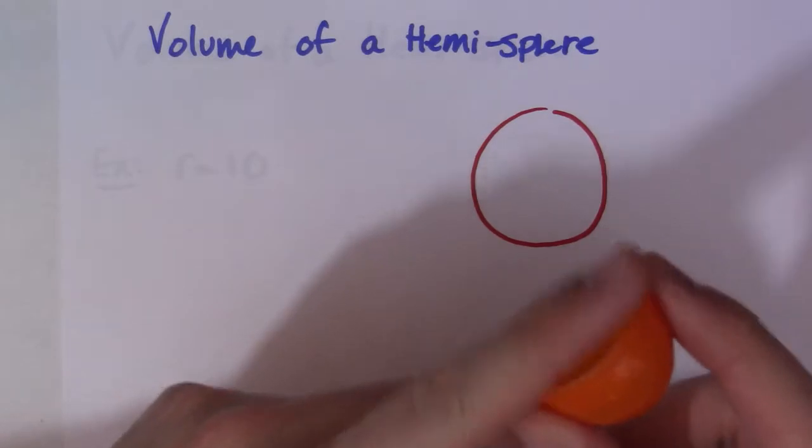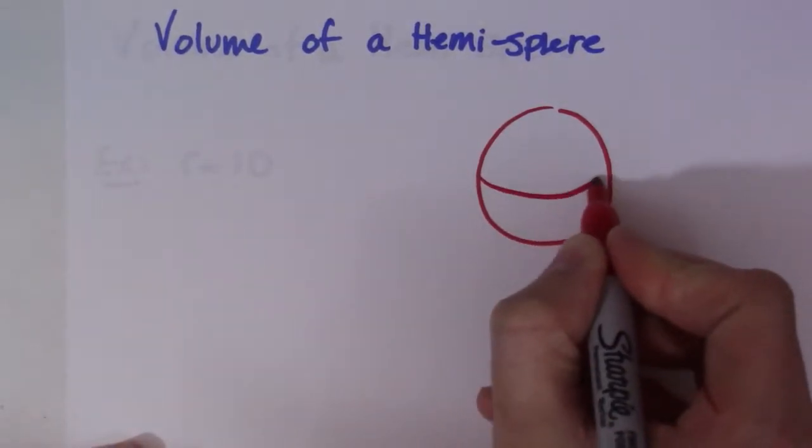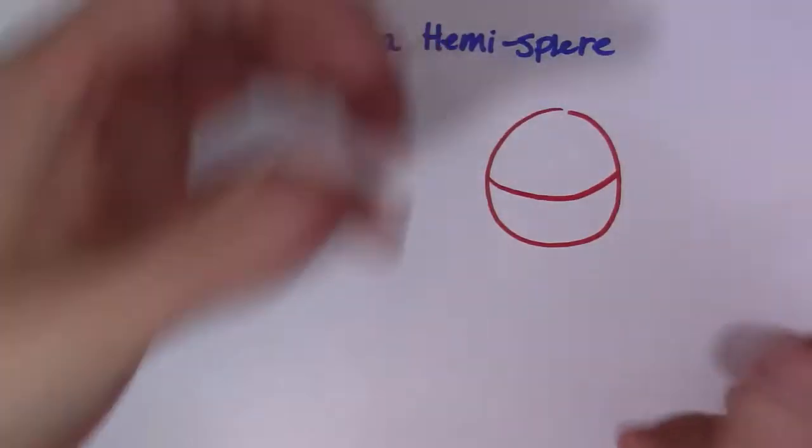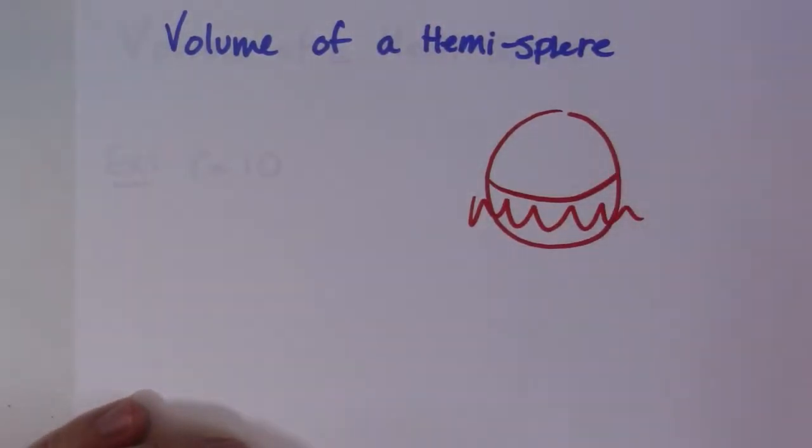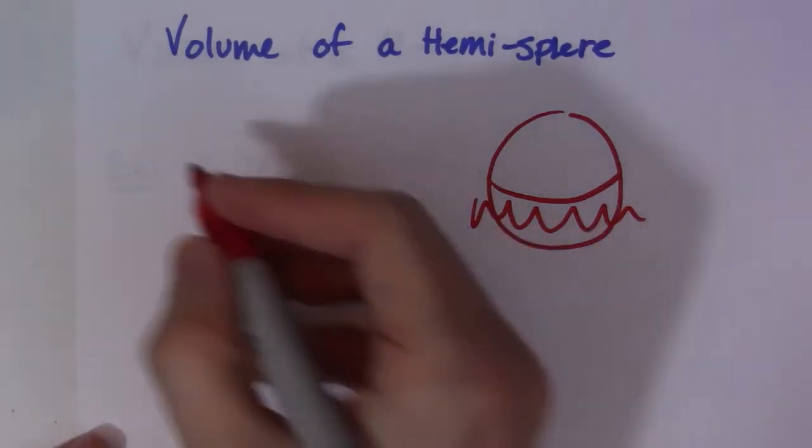this would be half of a hemisphere—or half a sphere, which would be a hemisphere. We basically divide this sphere in two and get rid of the bottom half.